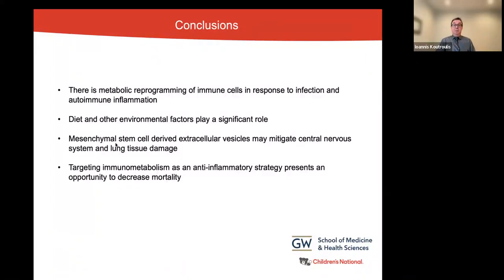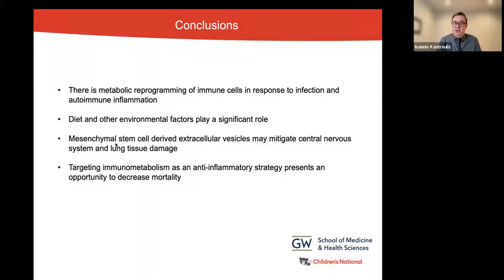Some take-home messages from this presentation: there is a metabolic reprogramming of immune cells in response to infection and autoimmune inflammation; diet and other environmental factors play a significant role; mesenchymal stem cell-derived extracellular vesicles may mitigate some of the damage that happens in the central nervous system and the lungs; and targeting immunometabolism as an anti-inflammatory strategy presents an opportunity to decrease mortality and improve clinical outcomes in many conditions, including severe infections, autoimmune diseases, and even cancer.